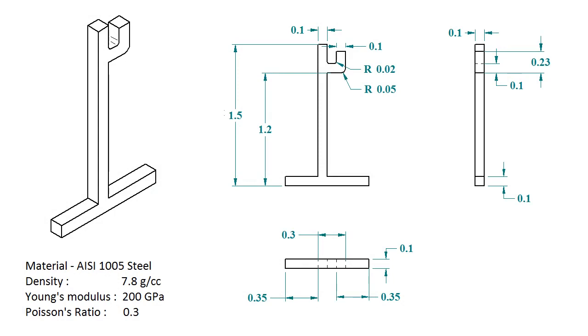We're going to use the dimensions from this schematic. We'll be using SI units, where length is in meters. The stand is a solid block made of steel with a density of 7.8 grams per centimeter cube, a Young's modulus of 200 gigapascals, and a Poisson's ratio of 0.3.